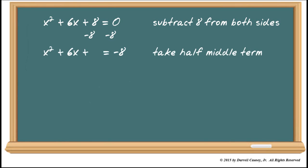All right, so X squared plus 6X plus 8 equals 0. Subtract 8 from both sides. And we will get X squared plus 6X equals negative 8. Take half the middle term, then square it, and you get 9. Now add 9 to both sides.